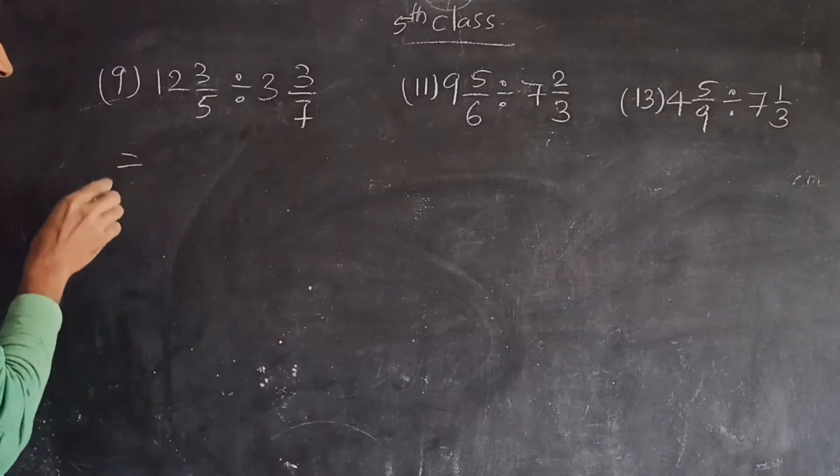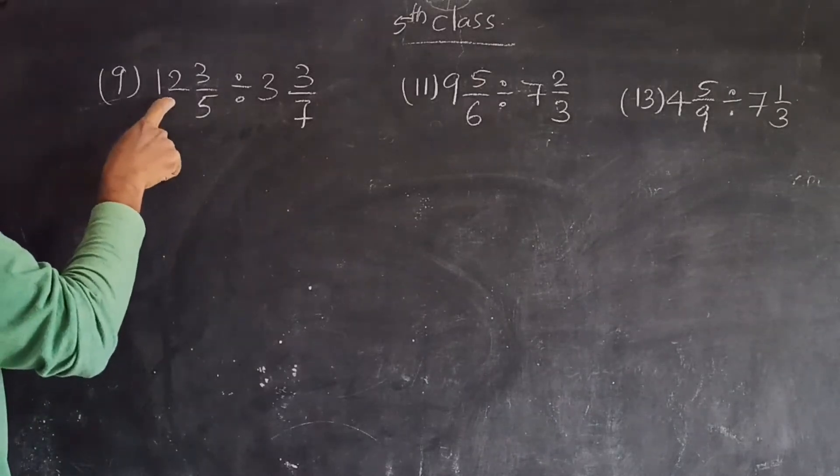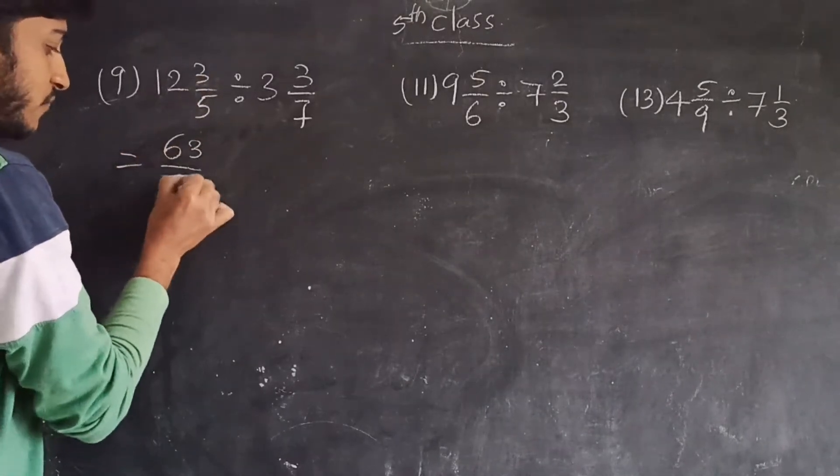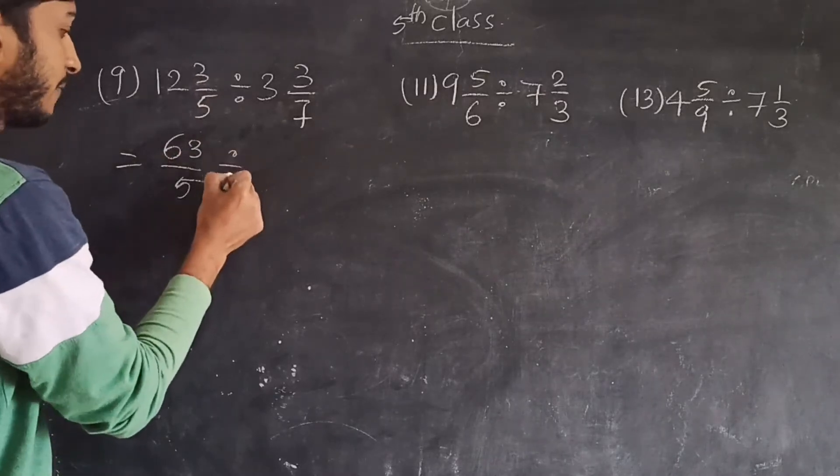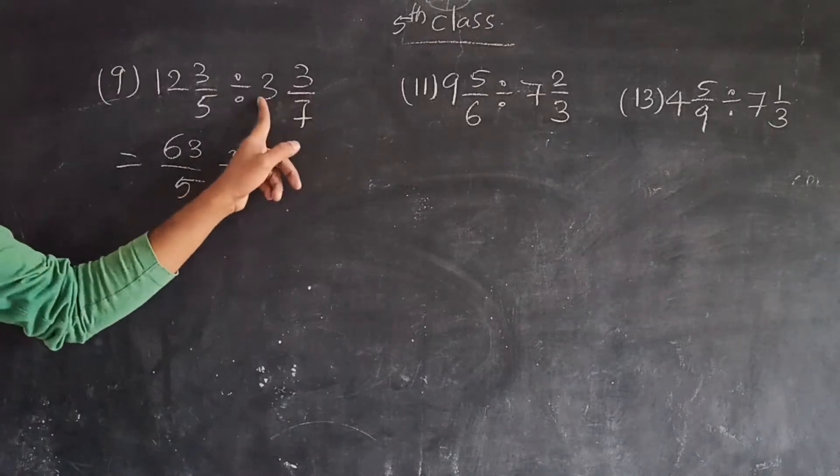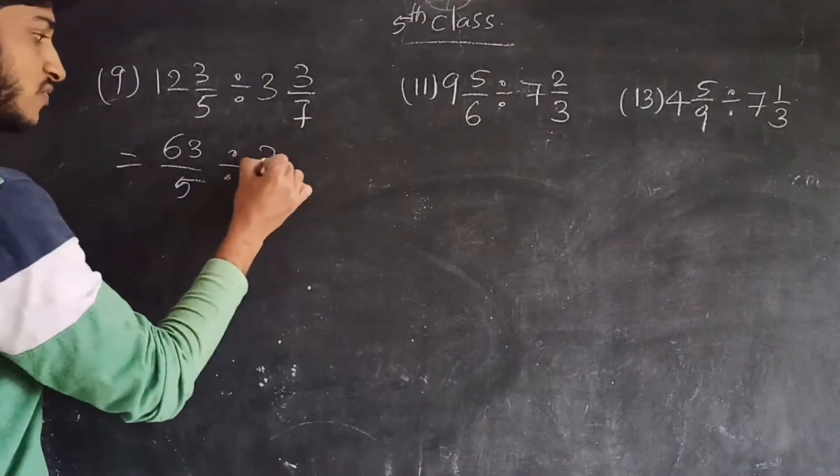So I'm multiplying 5 and 12. 5 into 12 is 60, 60 plus 3 is 63. So 63 by 5. Then convert the second one. 7 times 3 is 21, 21 plus 3 is 24. 24 by 7.